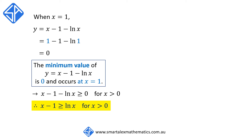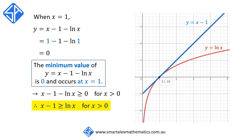To make sense of all this, here's a graph that represents the situation. The blue line is the graph of y is equal to x minus 1, and the red curve is the graph of y is equal to log of x. They intersect at the point 1, 0, and you can see that for all values of x greater than 0, the function y is equal to x minus 1 is above or greater than the function y is equal to log of x. They are both equal at the point when x is equal to 1.